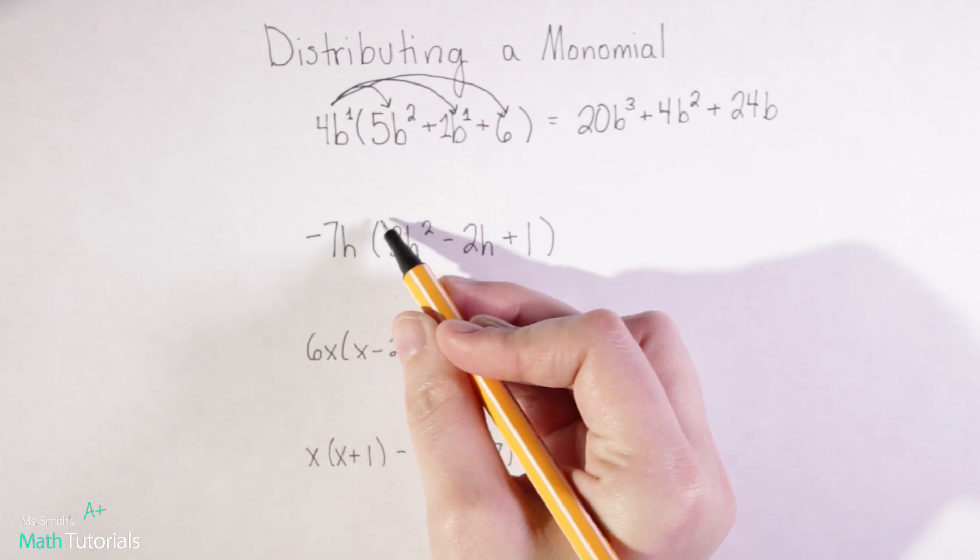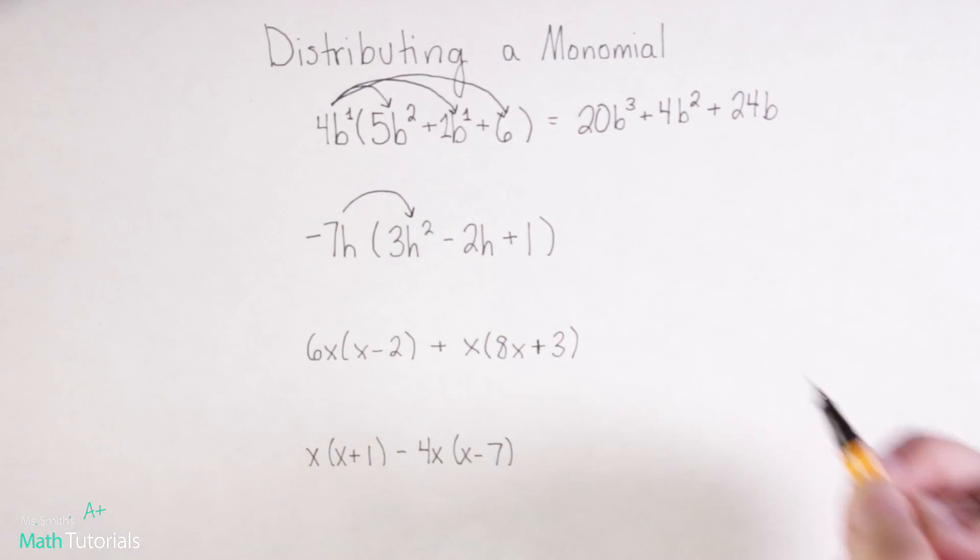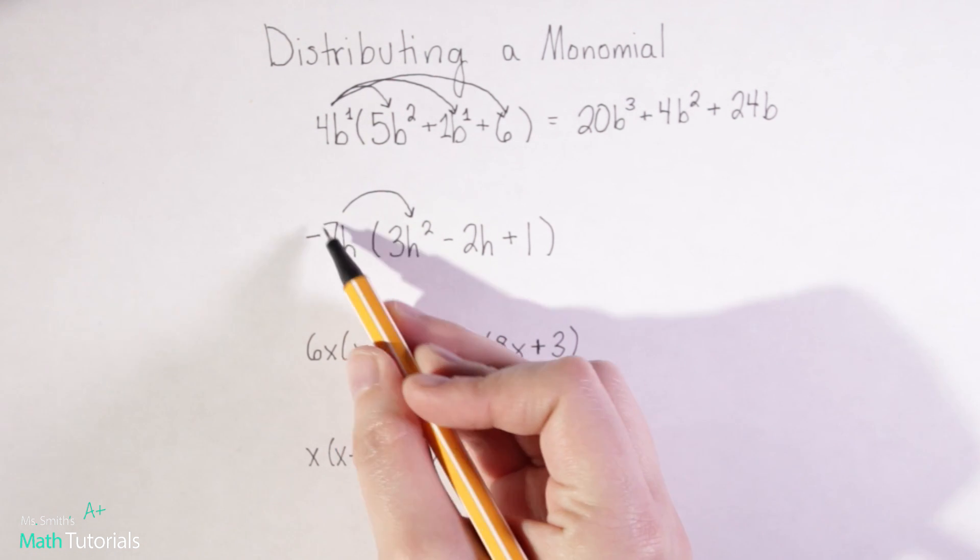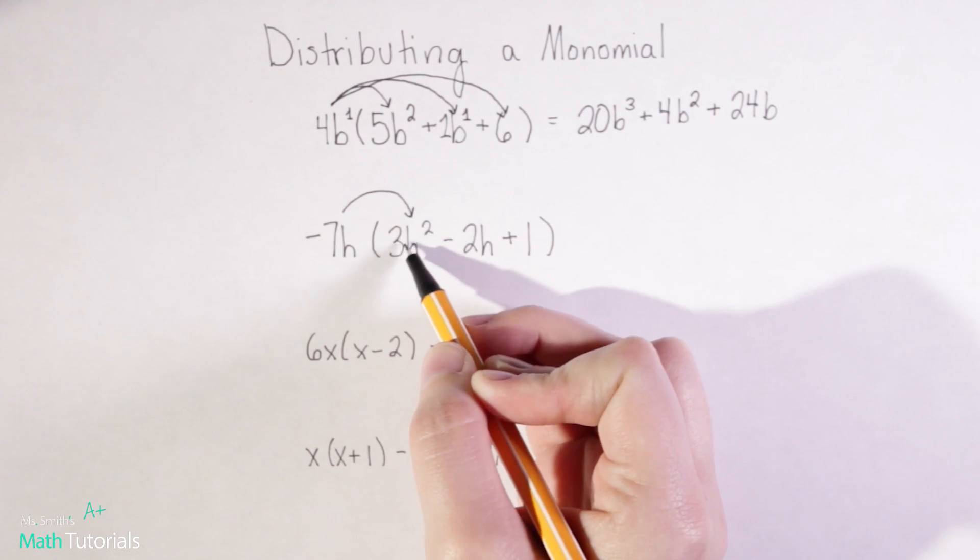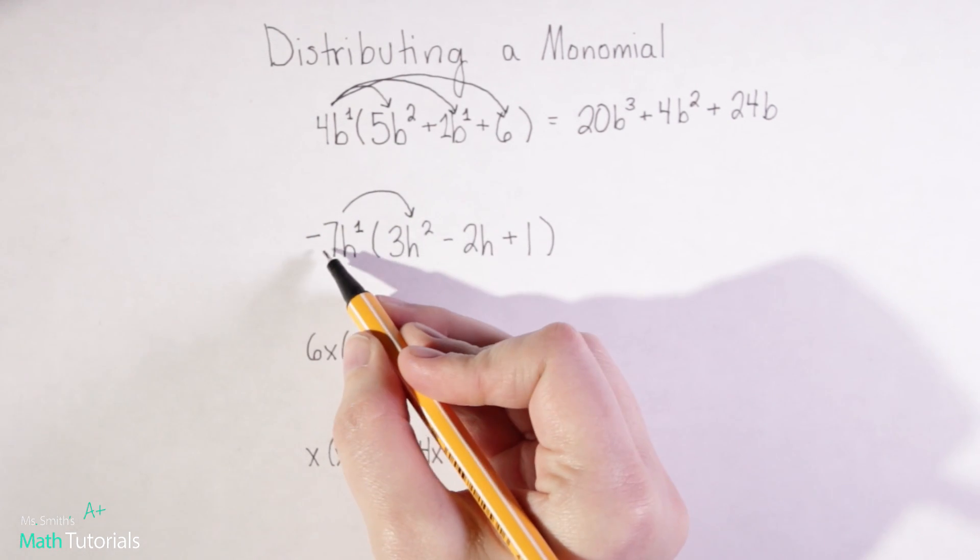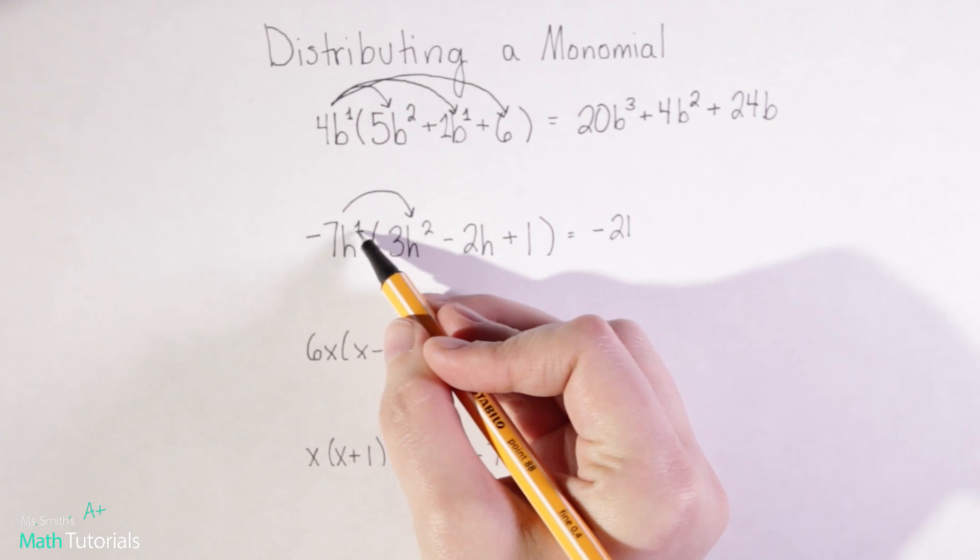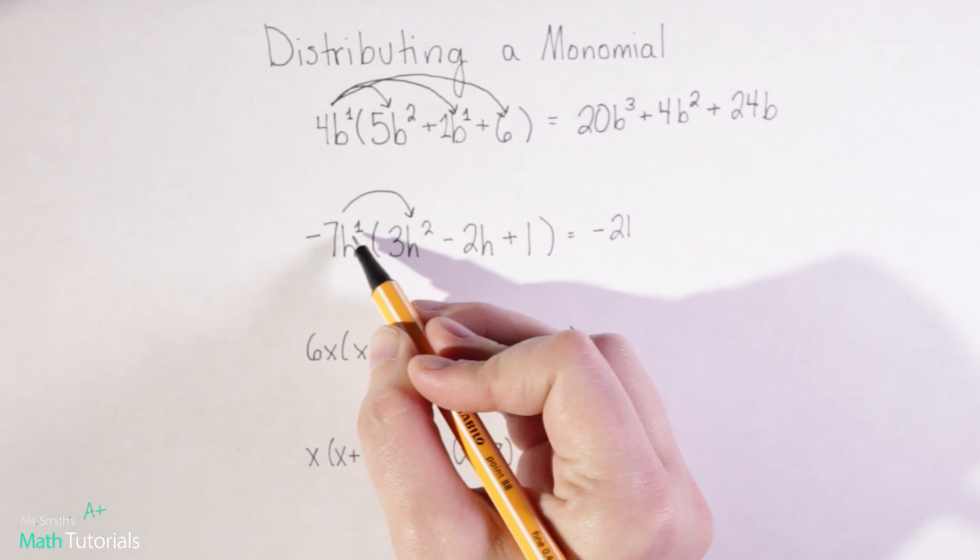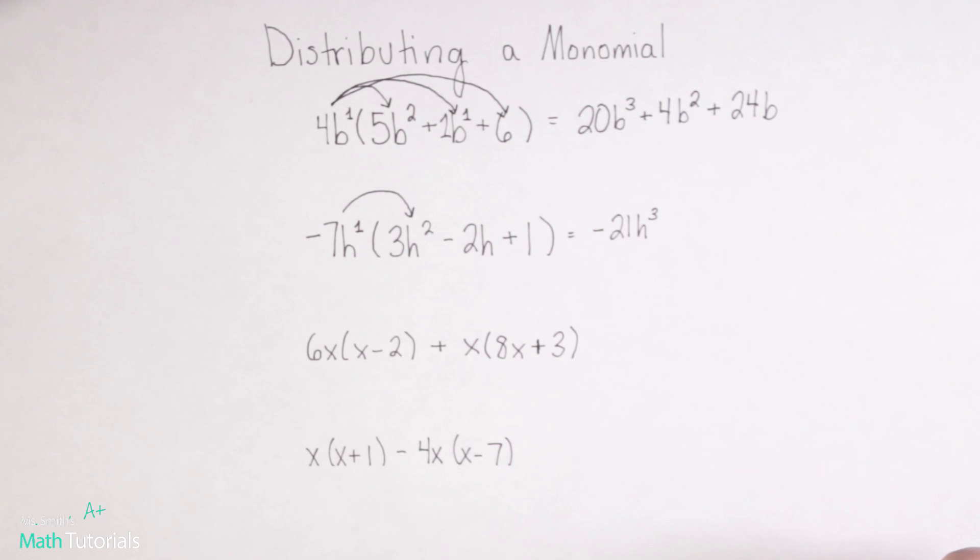Negative 7h is outside of this parentheses, so that means I need to distribute it into the parentheses. Don't be freaked out just because that's a negative, we still solve it the same way, we just have to be a little more careful with our signs. So negative 7h times 3h squared, remember that h has an understood one, so negative 7 times 3 would be negative 21. And then h to the first times h to the second, we're multiplying straight across so we add our exponents. 1 plus 2 is 3.